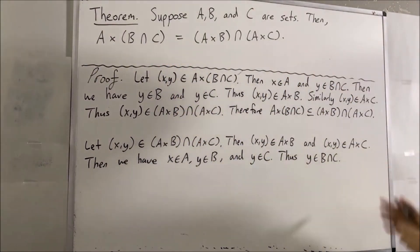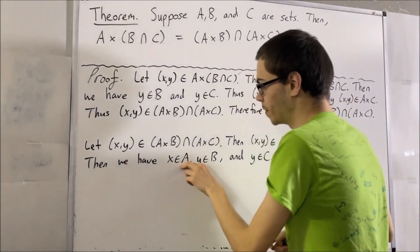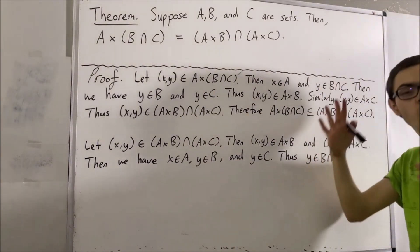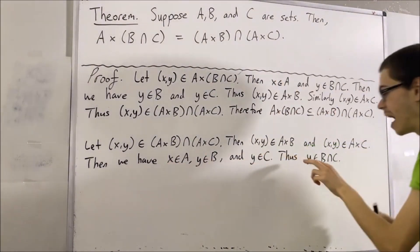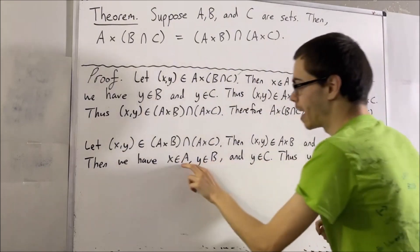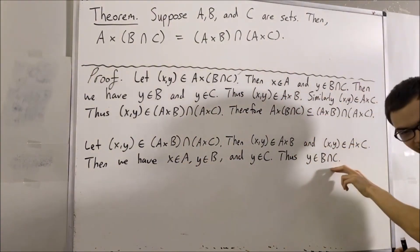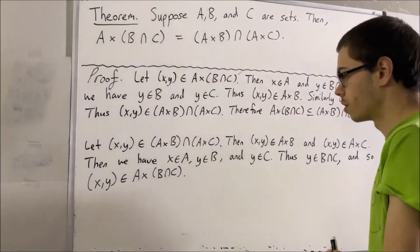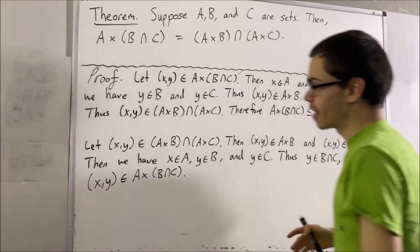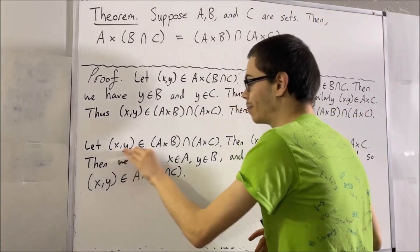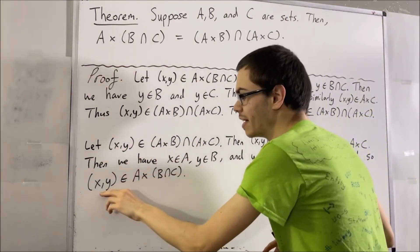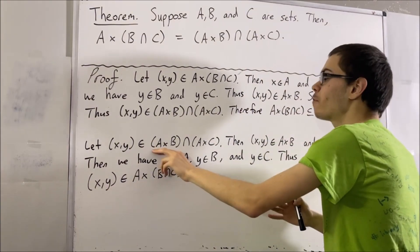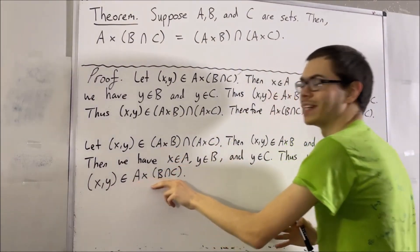And now, putting this together, notice that X is an element of A and Y is an element of B and C. So, we can say that the ordered pair X comma Y is an element of A times B and C. What we have shown here is that starting with an arbitrary element of this set, that same element is also an element of this set. And that means that everything in this set is also in this set.